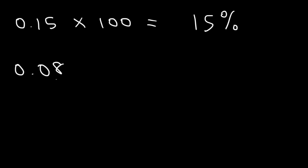The second method that you can use is you can move the decimal point two units to the right. 0.08 is equivalent to 8%.